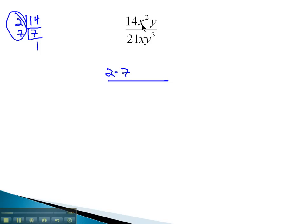And then we have x squared. X squared means x is multiplied twice, so we'll write that x is multiplied times y.